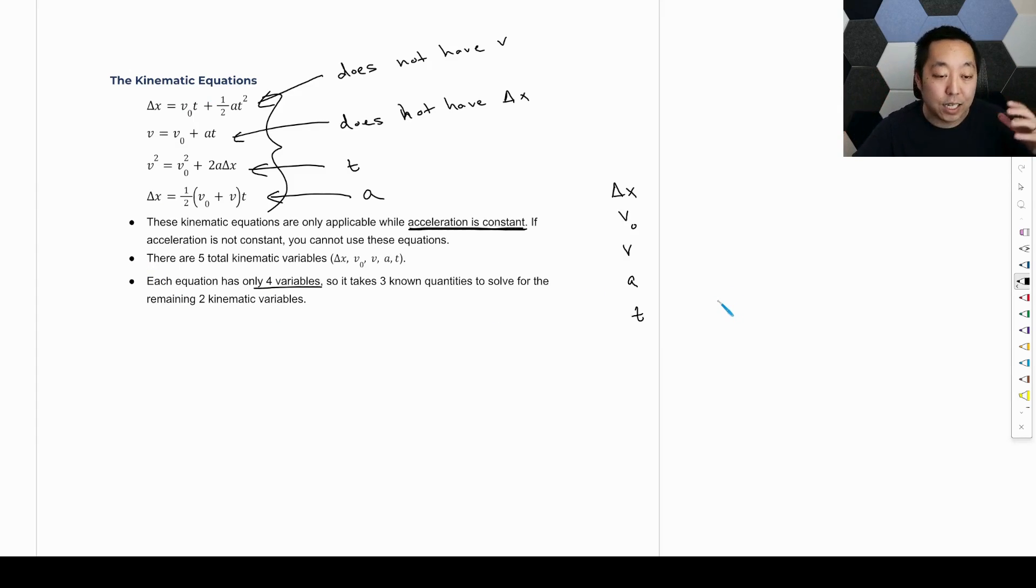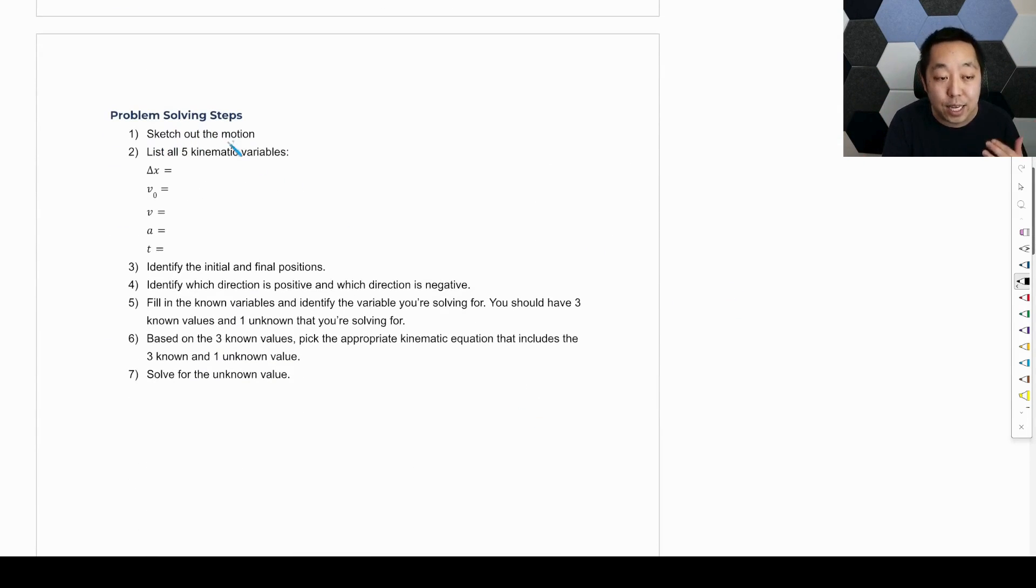So in terms of the idea, we're going to go through a problem-solving step. We're going to sketch out the motion. And you've been practicing on the previous lessons on what's the displacement vector, what's the velocity vector, how do you identify the direction of the acceleration in that vector? We're going to list all of those kinematic variables, just write them out. You're going to identify the initial and the final of the motion. You're going to identify which direction is positive and which direction is negative. We're going to fill in the known variables because all of these, except for time, are vector quantities. That's why you need to know the positive and negative direction, which is either given to you or you have to define when you're solving for the problem. But ideally, in a problem, you should have three known values and one unknown that we're looking for. And based on that, we're going to pick the appropriate kinematic equation that includes the three known and one unknown, and we're going to solve for the unknown value. So that is our problem-solving steps for any kinematics problem like this.